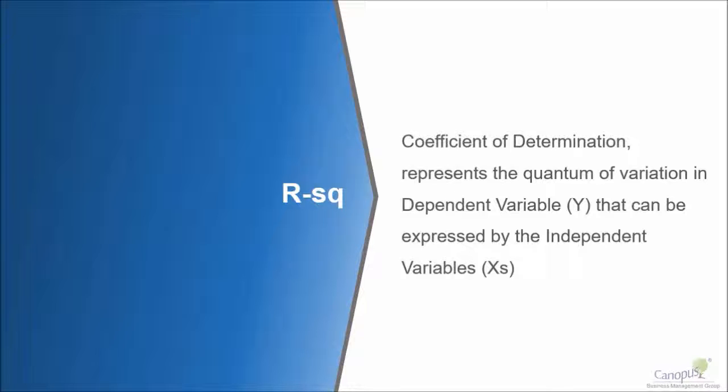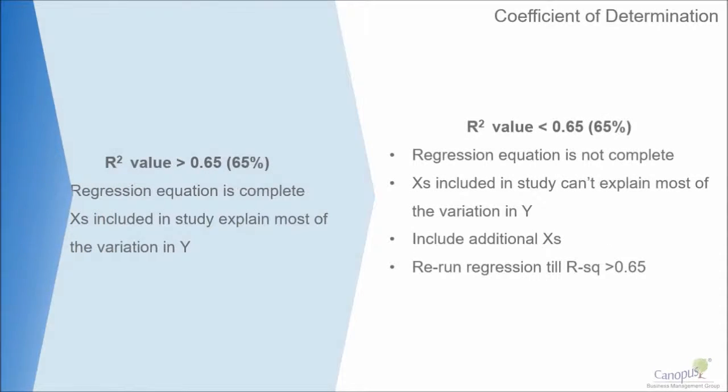That is what R-square talks about. R-square is usually expressed in percentage and we, as a rule of thumb, would like to look for any scenario where the R-square is greater than 65% because that means the factors that I have taken, the predictors that I have taken in my study, are able to explain at least 65% of the variation in my Y.